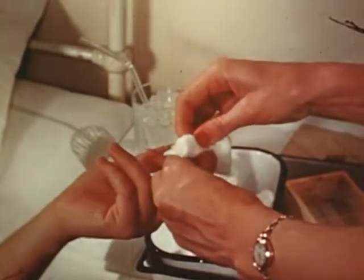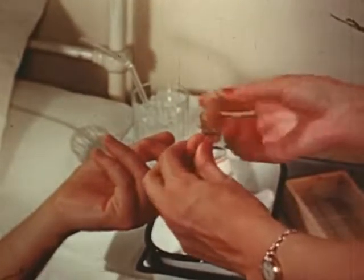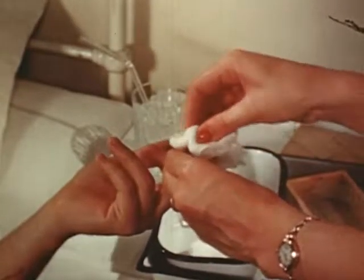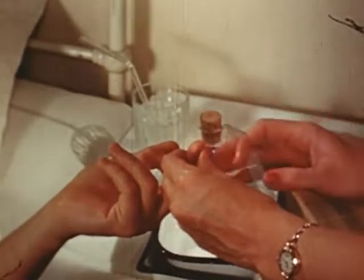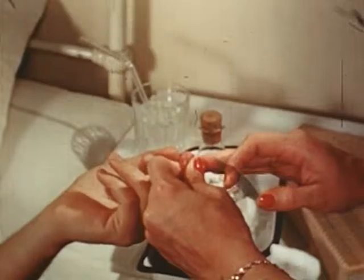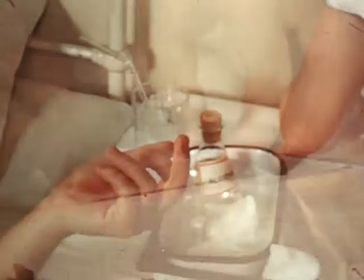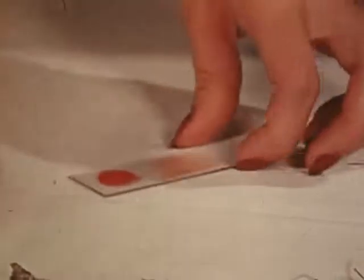Blood for making the smear is obtained by pricking the finger or the lobe of the ear after cleaning with an alcohol sponge. The prick is deep enough for the blood to well up under gentle pressure. Thick and thin smears may be made on the same slide. The smear is allowed to dry and is then properly identified with the date and the patient's name.